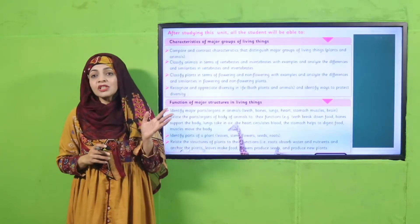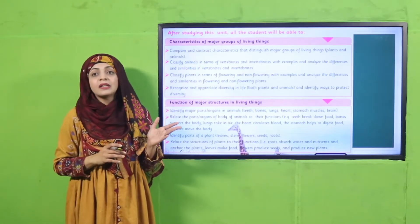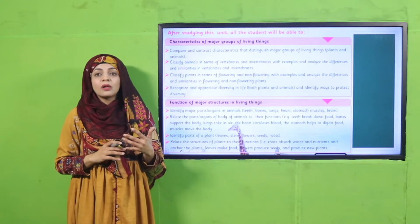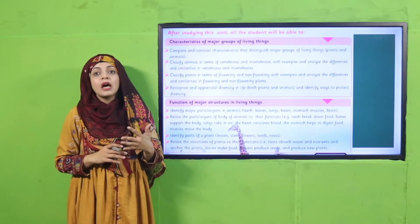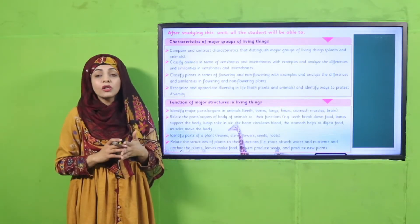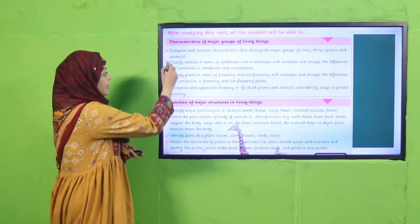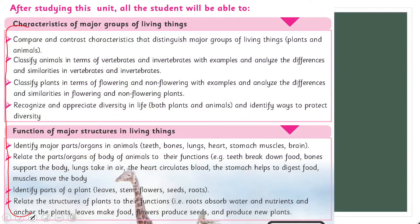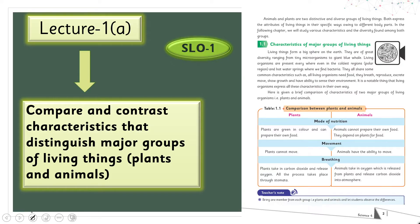Here are the student learning outcomes. By the end of this chapter, all students will be able to understand these points. We will discuss them one by one in detail — which point will be covered in which lecture, which objective will be attained, and what you will learn from each.